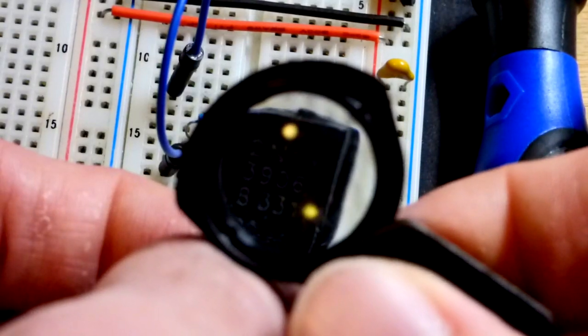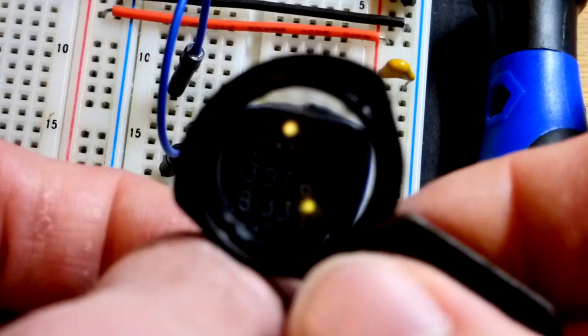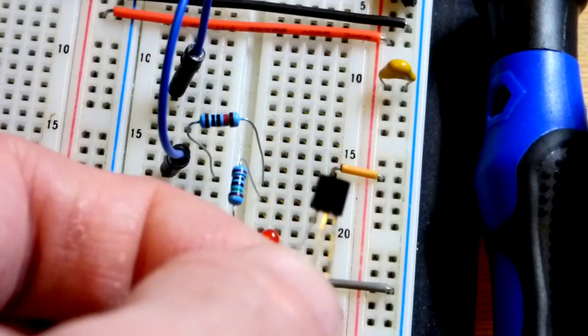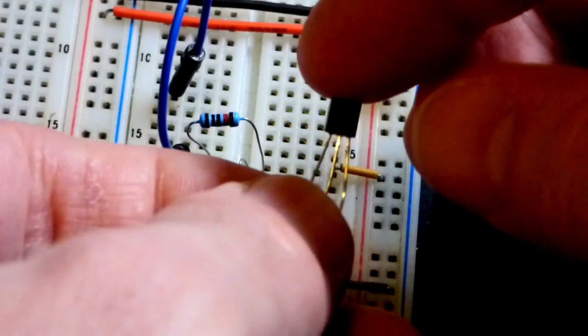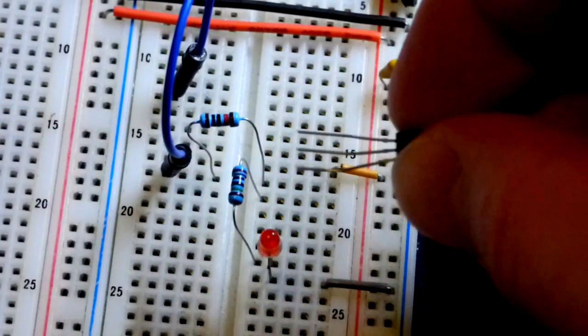So, now, here we are on the board. There's 2N3906 right there. Small writing. The loop helps a lot. Emitter to the left. Base in the middle.